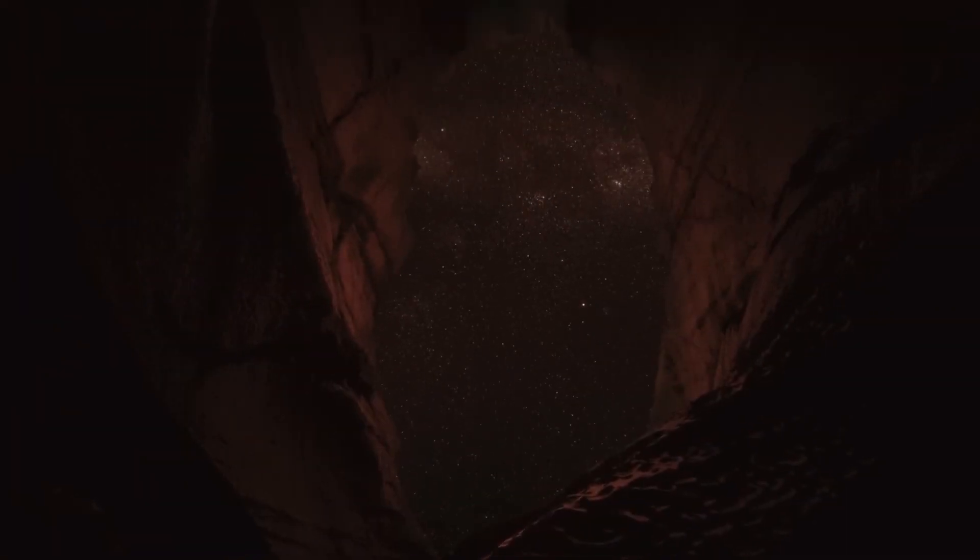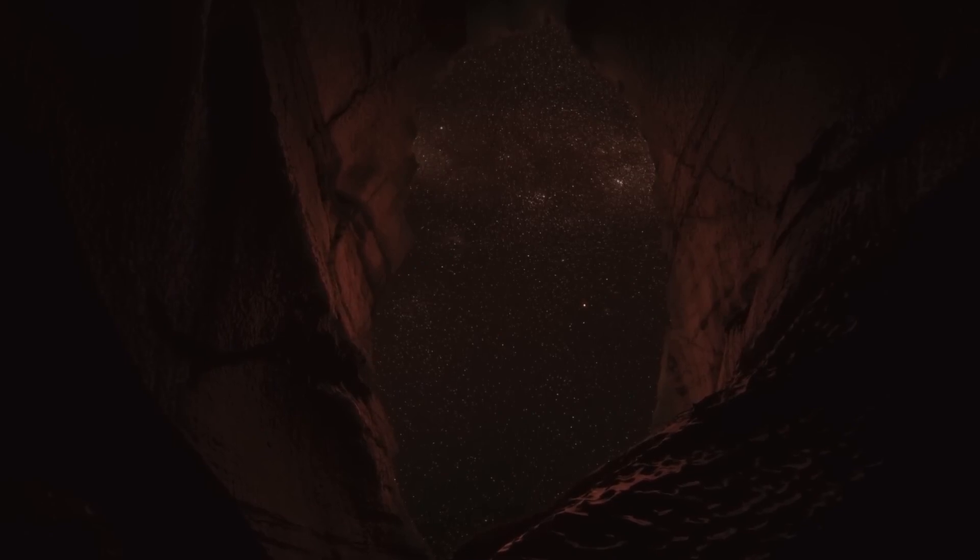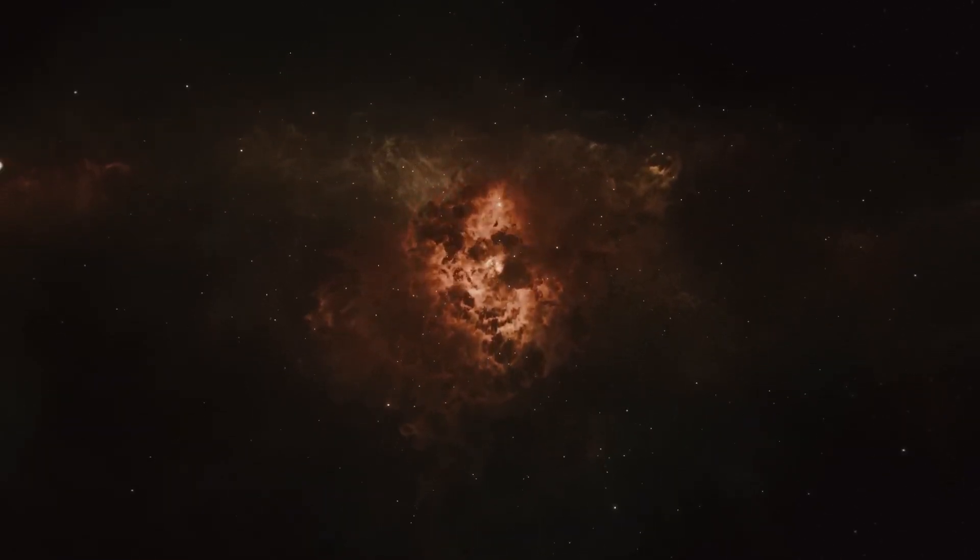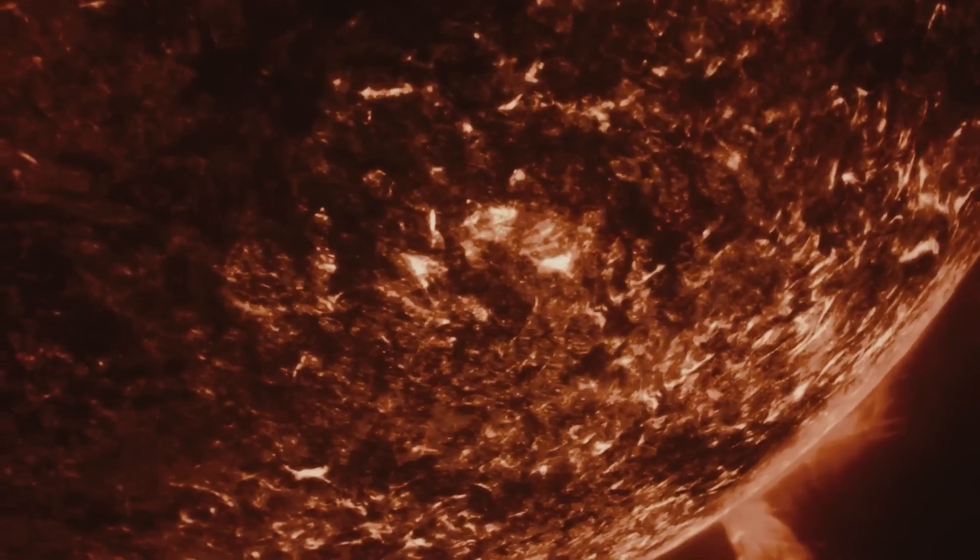A supernova is an extremely bright explosion that occurs when a star reaches the end of its life. Although harmless to life on Earth and safe to observe with the naked eye from our planet, the brightness of a supernova depends on the size of the exploding star.